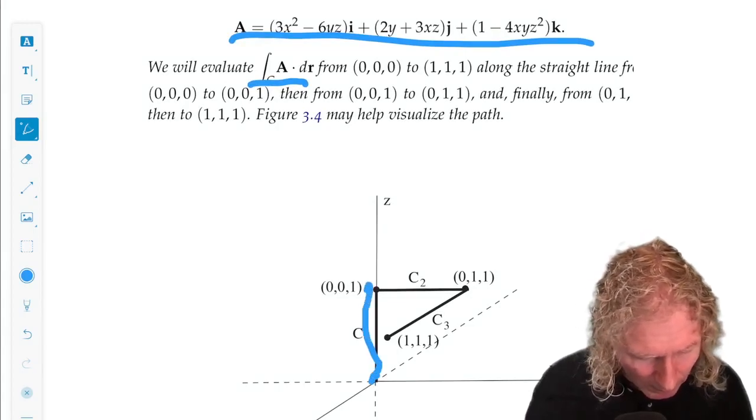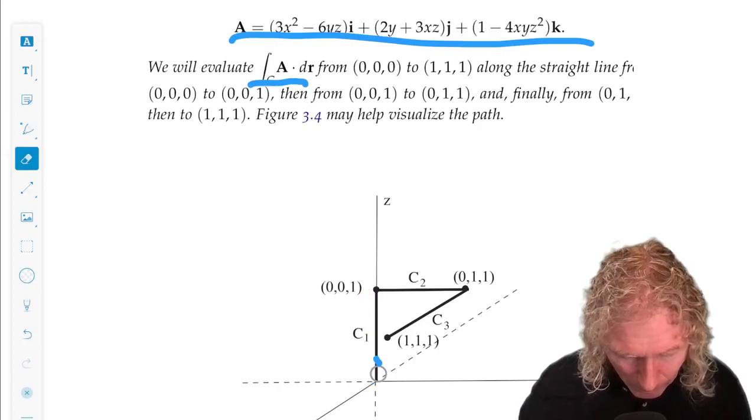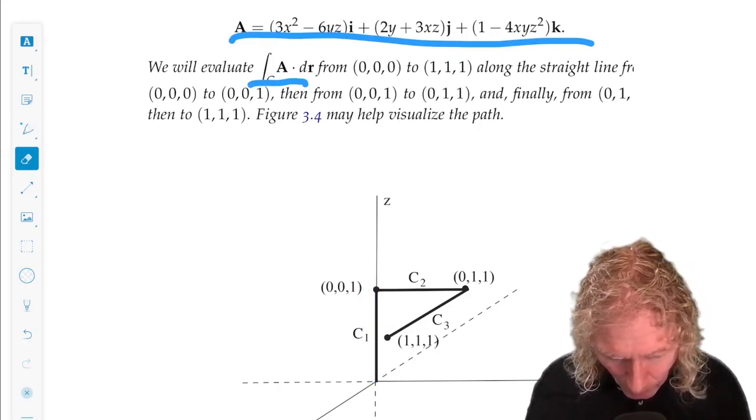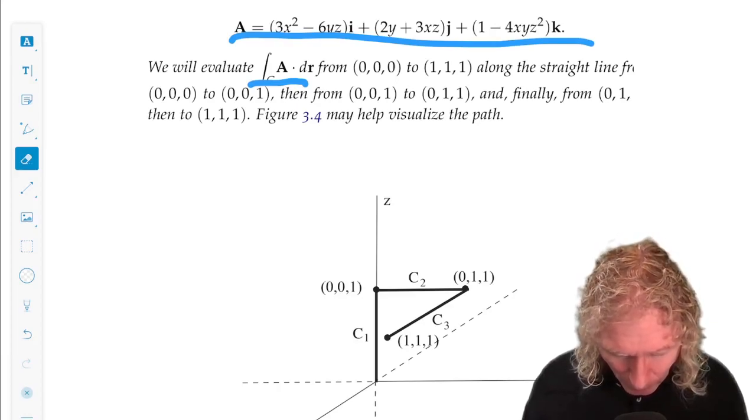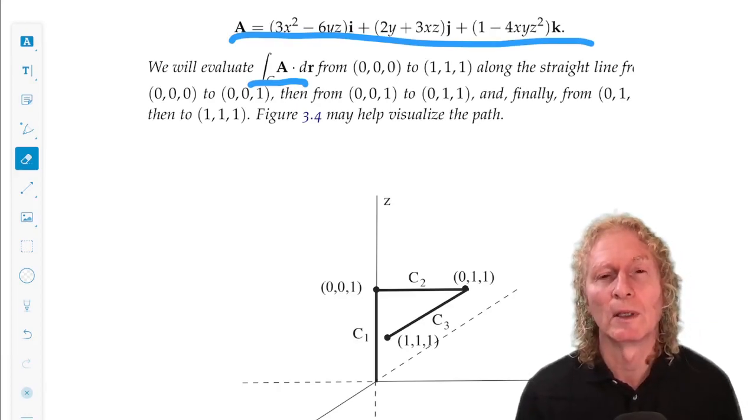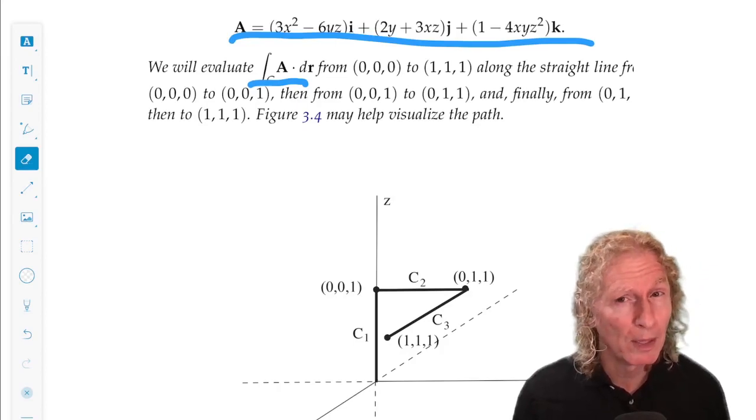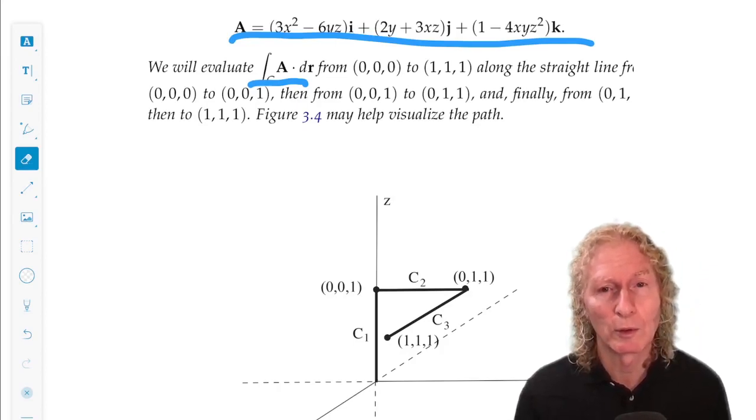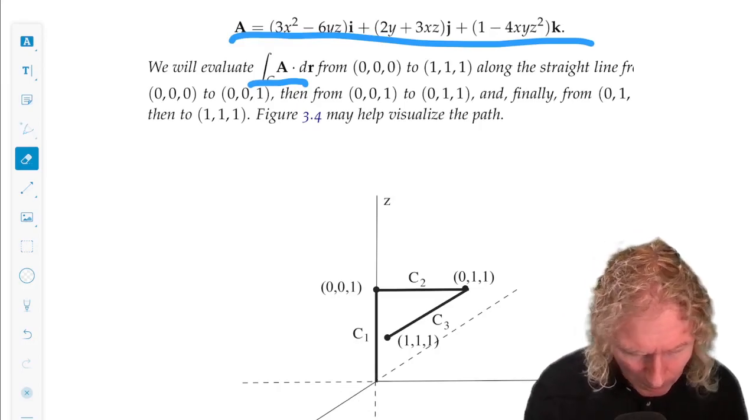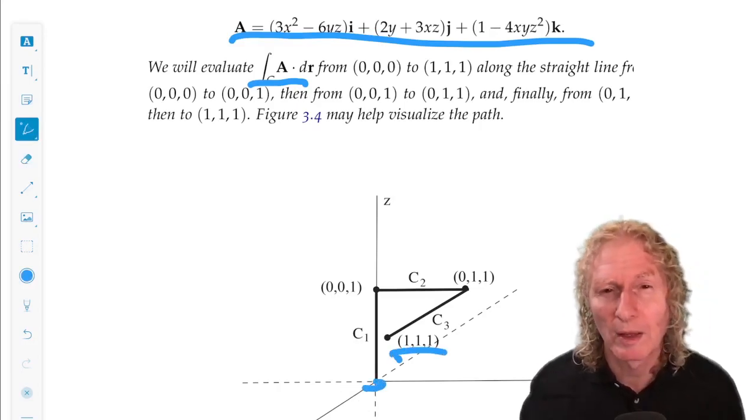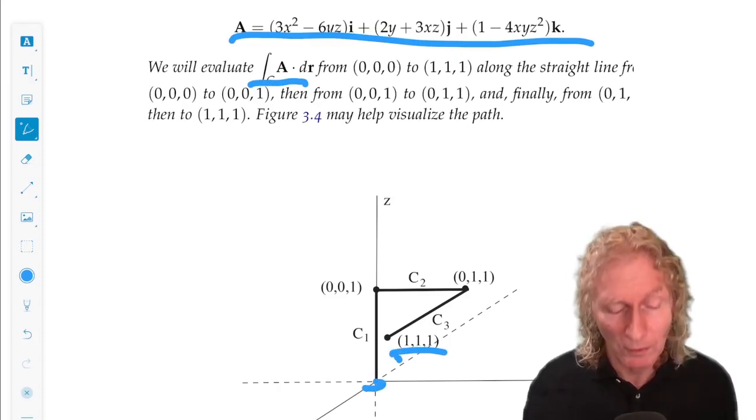From the origin to 001, we'll call that c1. From 001 to 011, we'll call that c2. And from 011 to 111, we'll call that c3. I specified the path, and I want you to integrate from the origin to 111 along that path that I specified. It's three pieces.